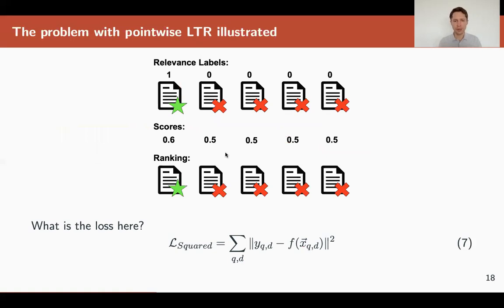Let's say we have five documents and only one is relevant and four are not relevant. Our ranking model F predicts scores of 0.6 for the relevant one and 0.5 for non-relevant ones.